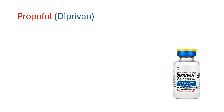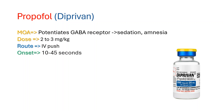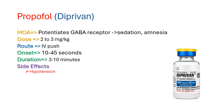Propofol has multiple mechanisms of action but primarily potentiates GABA receptors, causing sedation and amnesia. It is administered at a dose of 2 to 3 mg per kg IV push. Because it is highly lipid soluble, it induces sedation quickly within 10 to 45 seconds and has a duration of 3 to 10 minutes. Because of its quick onset of action and short half-life, propofol can also be used for post-intubation sedation as a continuous titratable infusion at a dose of 5 to 50 mcg per kg per minute. Side effects include hypotension, bradycardia, and apnea.